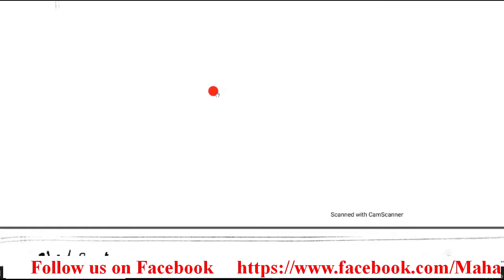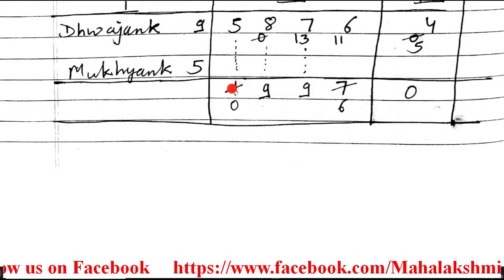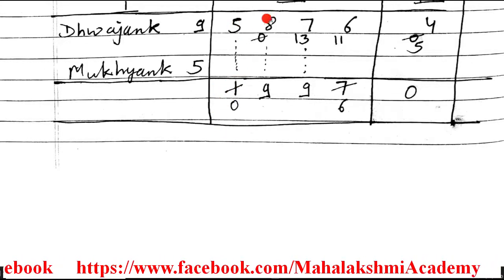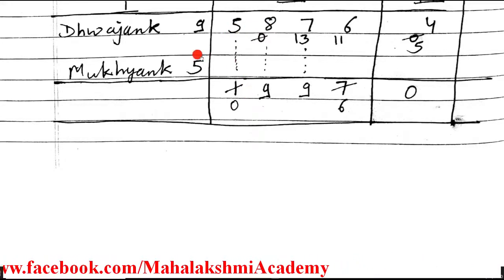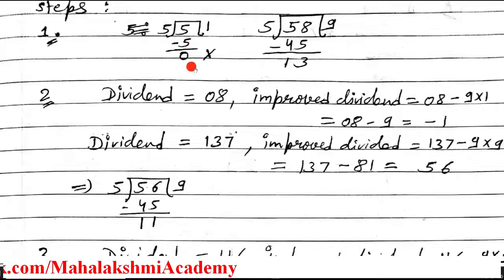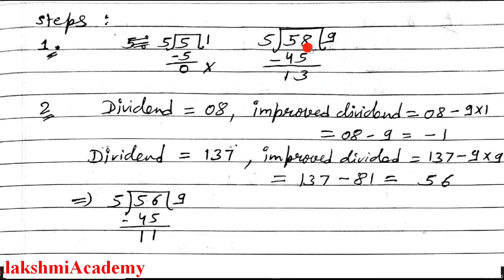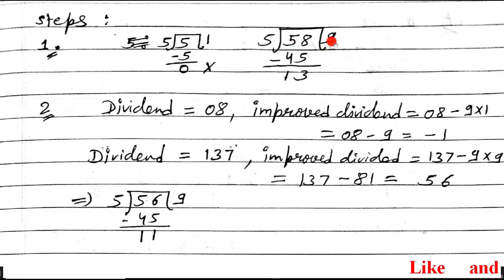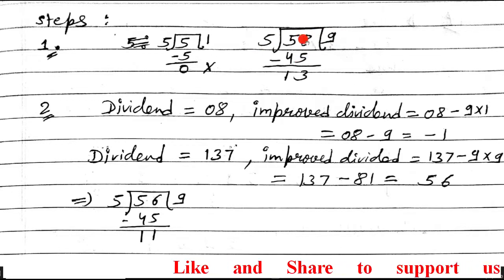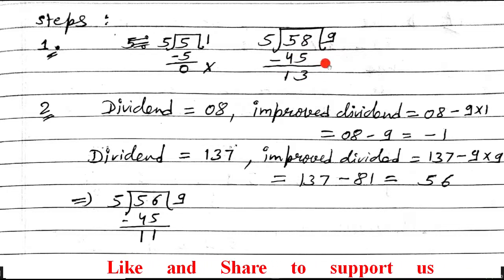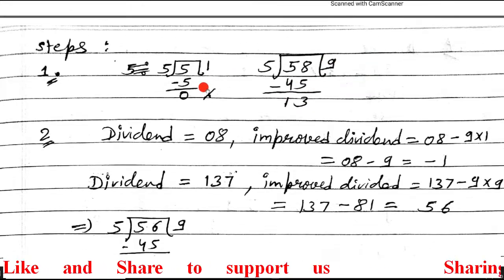Cancel it and take 0 instead. Mix 5 and 8 to get 58. Divide 58 by 5 — take only a single digit quotient, up to 9 maximum. So 5×9=45, subtract to get remainder 13. You have to redo the entries in the table because we got a negative improved dividend. Write quotient 9 and remainder 13 in the table.